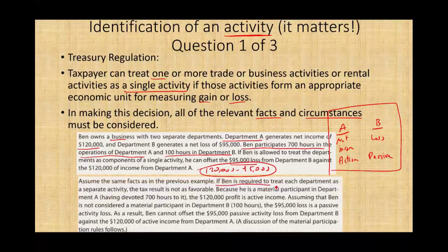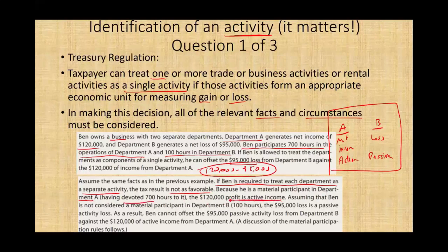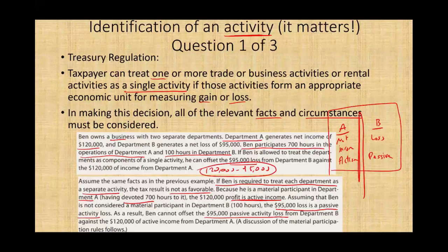If Ben is required to treat each department as a separate entity, the tax result is not as favorable. Because he devoted 700 hours to Department A, the profit is active income. Assuming that Ben is not considered a material participant in Department B, the $95,000 loss is a passive loss. As a result, Ben cannot offset the passive activity loss against the income from A. So it matters how you organize your activities.